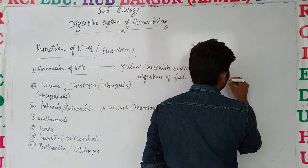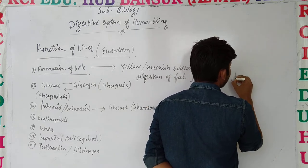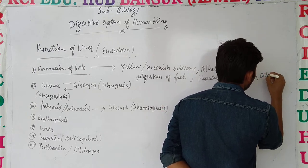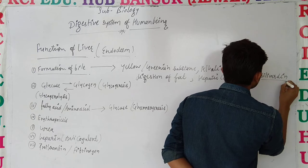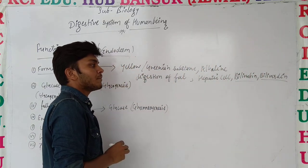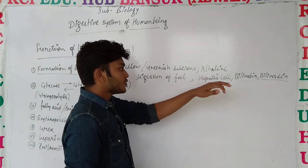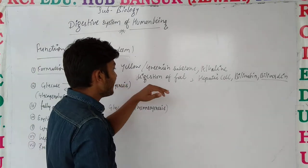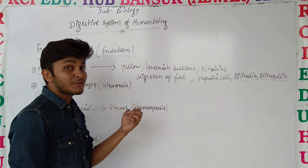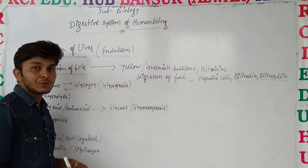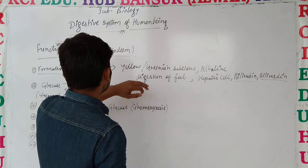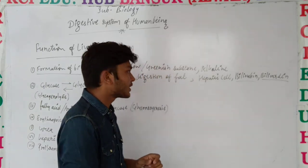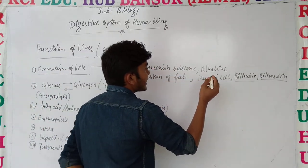इसके अंदर जो main pigments होते हैं, these are bilirubin and biliverdin, जो इसको yellowish color provide करते हैं। Bile quite important है क्योंकि it is digesting fat। अगर bile form नहीं होगा liver के अंदर, तो fat का digestion नहीं हो पाएगा। Bile liver के अंदर continuously form हो रहा है और bile किसके अंदर store होता है — gallbladder के अंदर।